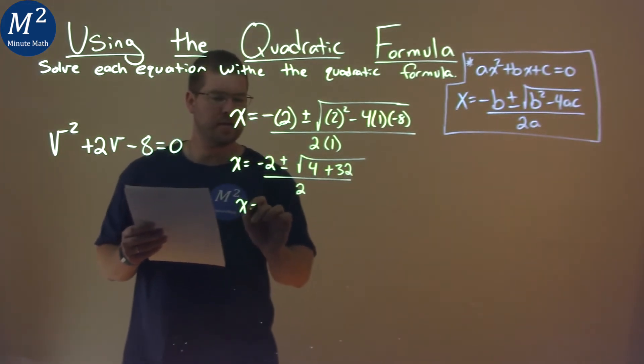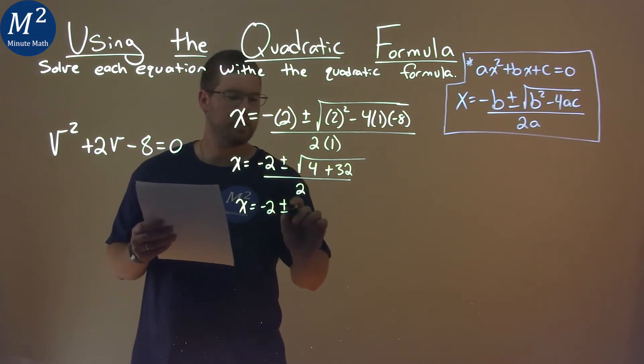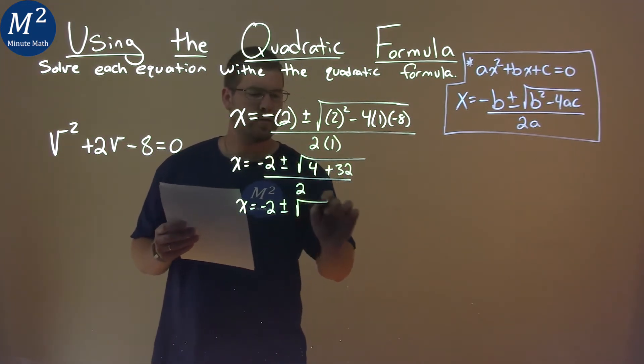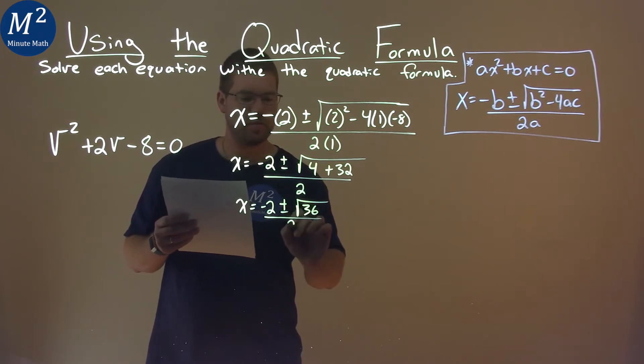Going down here, take our time, x equals a negative 2, plus or minus, and 4 plus 32 is a 36, over 2.